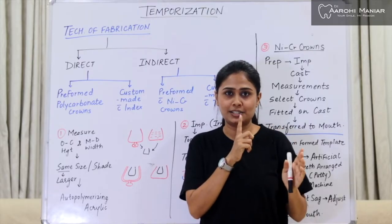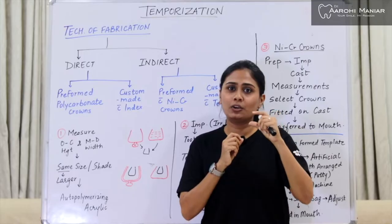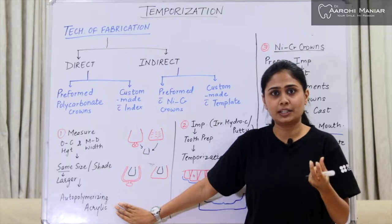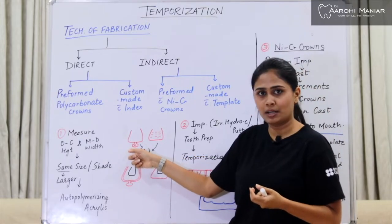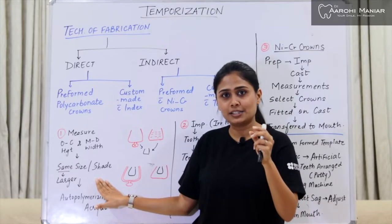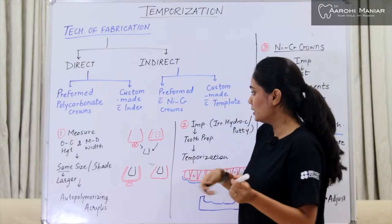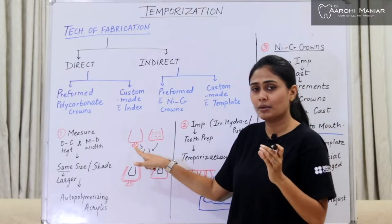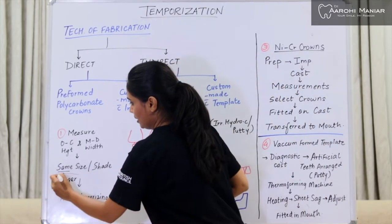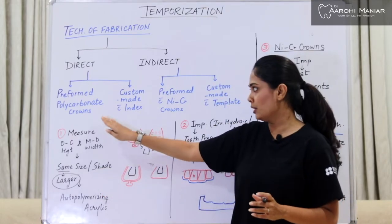For example, if I'm preparing the left central incisor, my dentist will take the mesiodistal and occlusal-cervical dimensions first, then grind the tooth. After that, we select a polycarbonate crown — but we select a slightly larger size than the measured dimensions. Why not the same size? Because we need to put luting cement in between. If the crown is the same size as the prepared tooth, there's no space for the luting material. So we go for a larger size but the same shade.